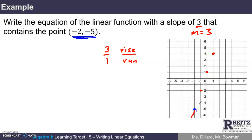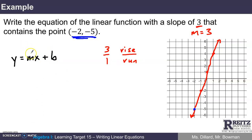So the line itself looks something like this. What might be helpful is to think about the slope-intercept form: y equals mx plus b, where m is the slope. We already know m — it's 3. And b is the y-intercept, where the line crosses the y-axis — right there at 1. So if I know m and b, I can write the equation: y equals 3x plus 1.